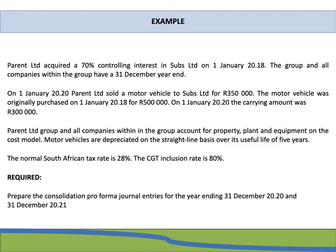Starting with an example: Parent Limited acquired a 70% controlling interest in Subs Limited on 1 January 2018. The group and all companies have a 31 December year end. On 1 January 2020, Parent Limited sold a motor vehicle to Subs Limited for 350,000 rand. The motor vehicle was originally purchased on 1 January 2018 for 500,000 rand, and on 1 January 2020 it had a carrying amount of 300,000 rand.